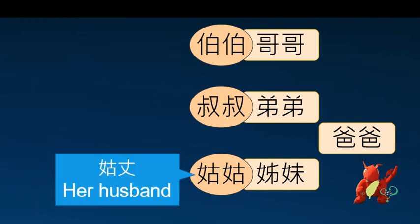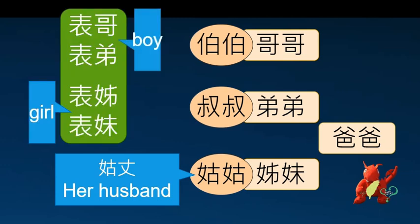My father's sisters are all called 姑姑. Her husband is called 姑丈. And their children are my 表 siblings because they have different family names from me: 表哥, 表弟, 表姐, 表妹.